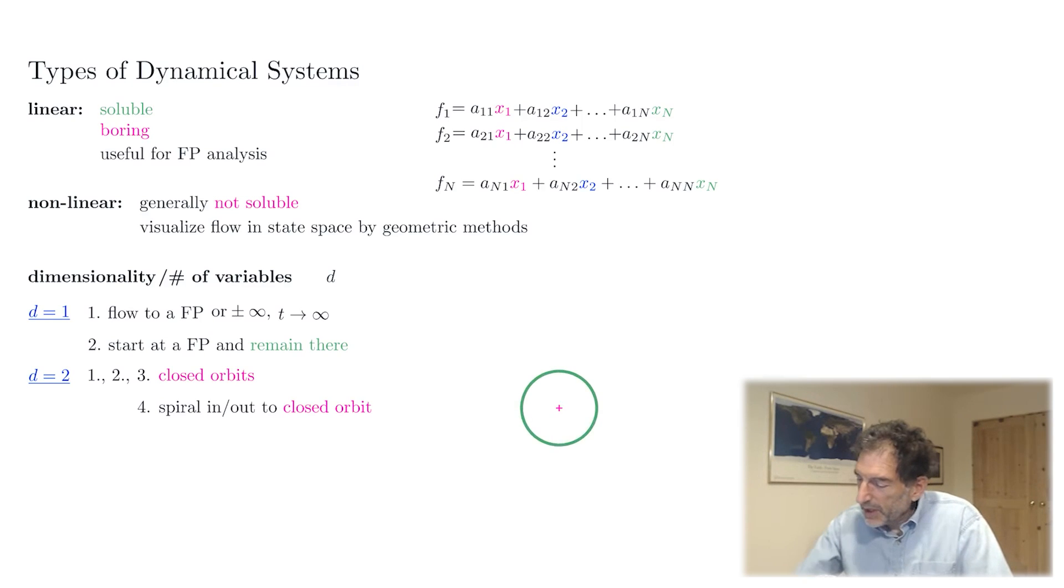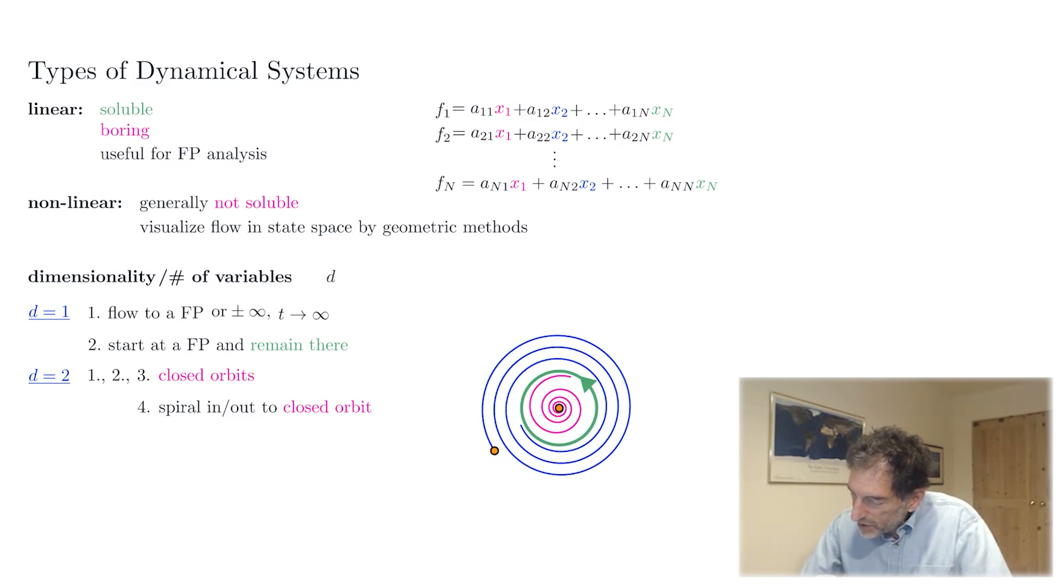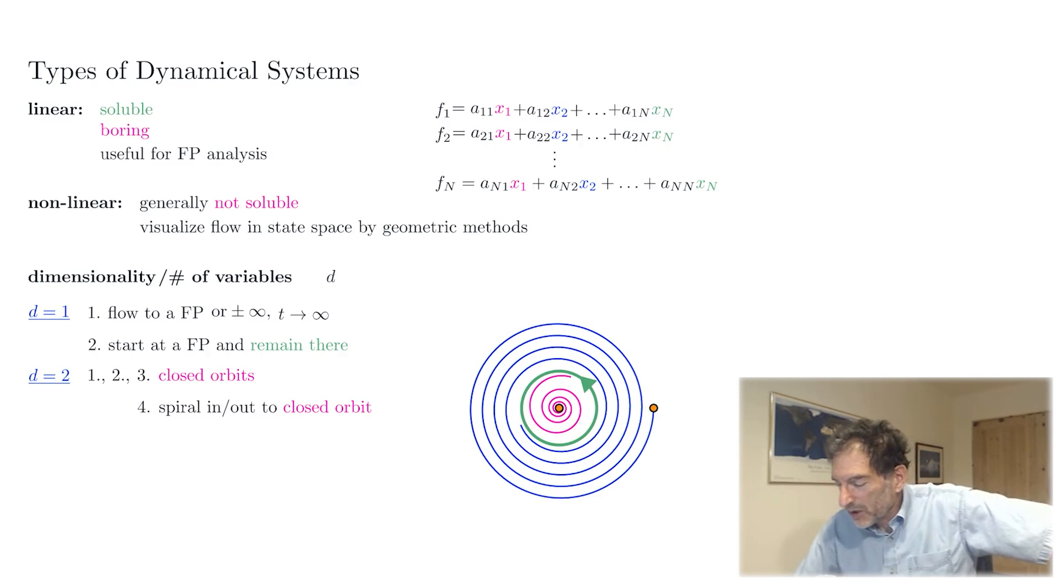then if you start inside, you have to stay inside. And you may either go to a fixed point or go to some closed orbit inside of this. Whereas if you start outside, you have to stay outside. There's no chance of going back in. So this notion of demarcating orbits by staying inside or outside of a closed orbit turns out to be a useful simplifying feature of two dimensional flows. And this we'll see later on is formalized by something known as the Poincaré-Bendixson theorem.